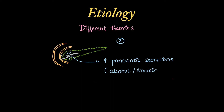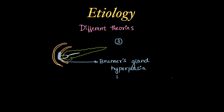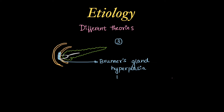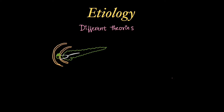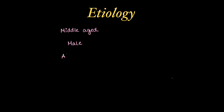The second theory involves increased pancreatic secretions due to consumption of alcohol or smoking. The third theory is that Brunner's glands present in the duodenal mucosa can undergo hyperplasia, causing stasis of pancreatic secretions. The fourth theory is heterotopic pancreas — ectopic pancreatic tissue present in the duodenum alongside the normal pancreas. The fifth theory is peptic ulcer disease.